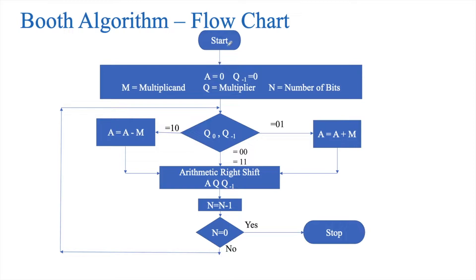Here is a flowchart. First, we have to start and make some initializations: initialize register A to 0, Q-1 register to 0, assume M to be the multiplicand, Q to be the multiplier, and N to be the number of bits. We then check Q0 and Q-1. We have four possibilities: 00, 01, 10, or 11. If the bits are equal to 00 or 11, we just shift the content of A, Q, Q-1 to the right, reduce N by 1, and check whether N equals 0. If it is 0, we stop; if not, we proceed with the algorithm once again.